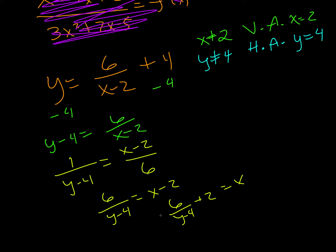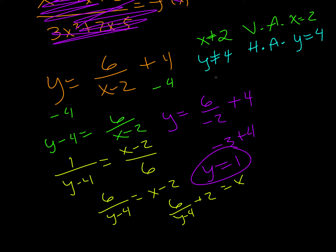That's another reason why taking this all the way to the end is useful. So I'm going to plug in 0 for x right here. That's going to give me y equals 6 over negative 2 plus 4. So 6 over negative 2 is negative 3 plus 4, and so y is equal to 1. We have a y-intercept at y equals 1.